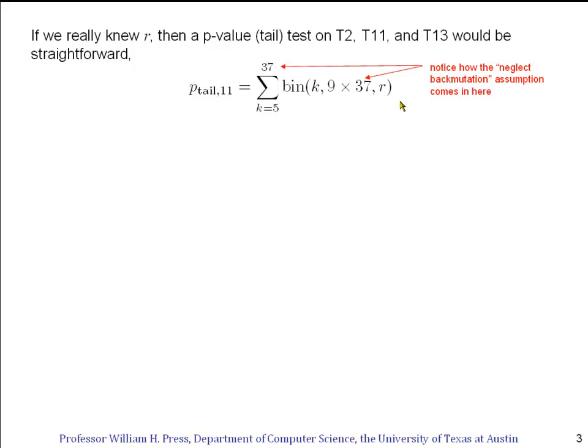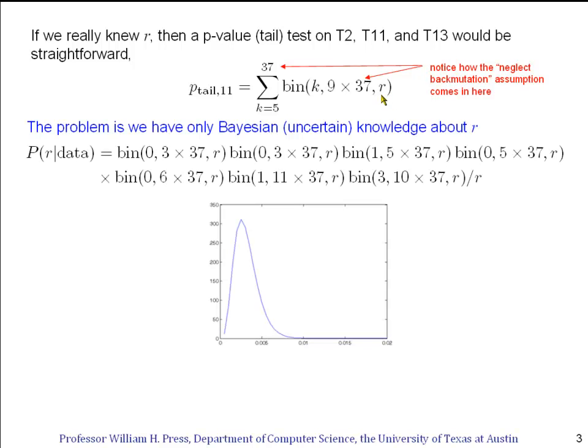But that's not the problem. The problem is we don't really know what value of R to put in here for the binomial probability. We have Bayesian uncertain knowledge about R. And you'll recall that was summarized by a statistical model here. We used a prior 1 over R because that was the scale independent non-informative prior. And we came out with a probability distribution that looks something like this.